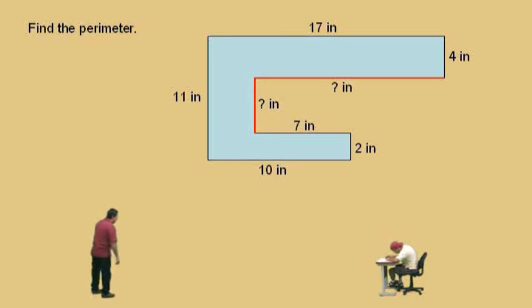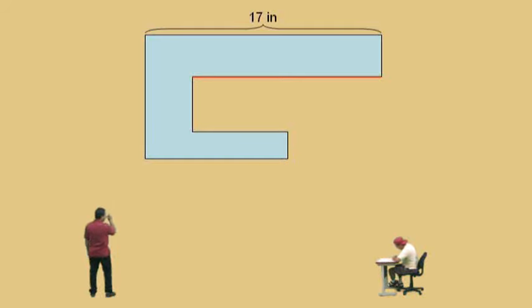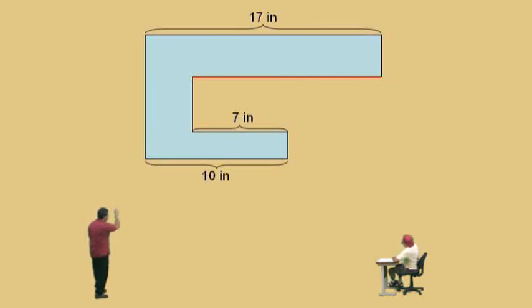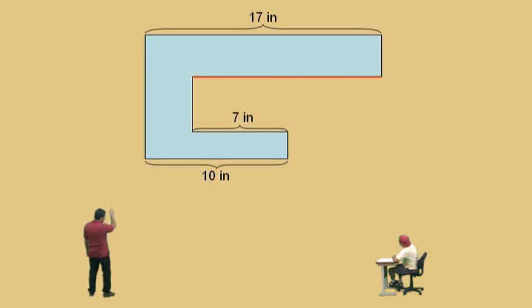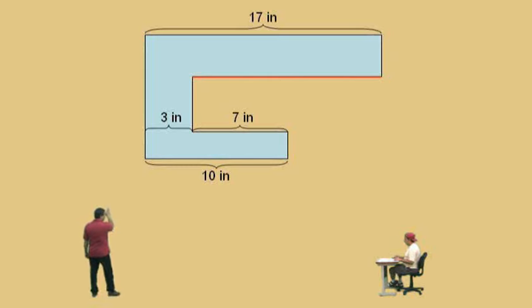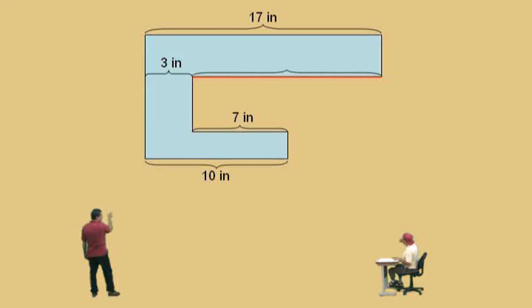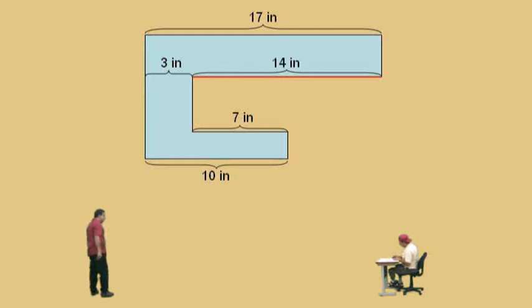We're first going to start with our horizontal lengths. We've got 17 up there, 7 here, and the bottom is 10. We've got to find that missing length there. If that's 10 and that's 7, what's that missing length right across? Three — because 7 and 3 is 10. Now if we move that 3 inches up there, all the way across the top is 17. If this is 3, what's 17 subtract 3, Charlie? Fourteen — it's got to be 14, because 14 plus 3 is 17.